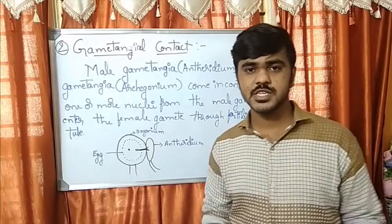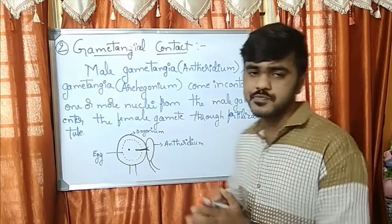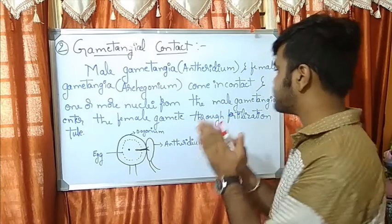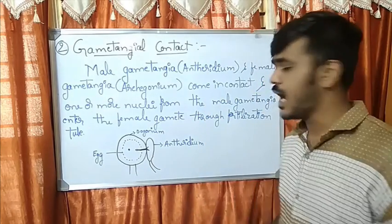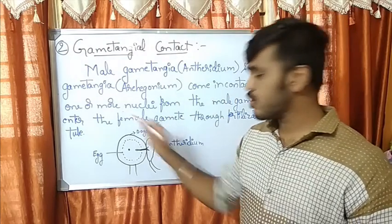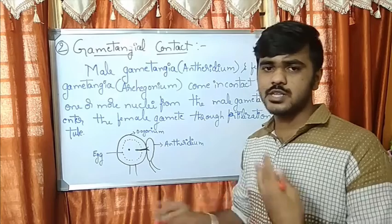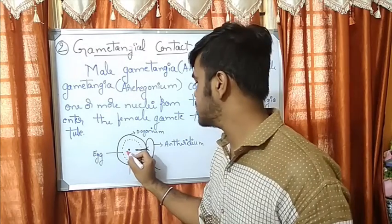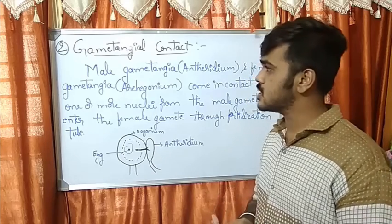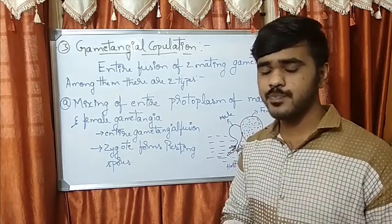The next method of sexual reproduction is gametangial contact. Here the male gametangia and female gametangia — the antheridium and archegonium — come in contact. A fertilization tube is formed between them. One or more nuclei from the male gametangia move through the fertilization tube to the female gametangia, fuse with the egg, and form the zygote. Thus reproduction takes place through gametangial contact.